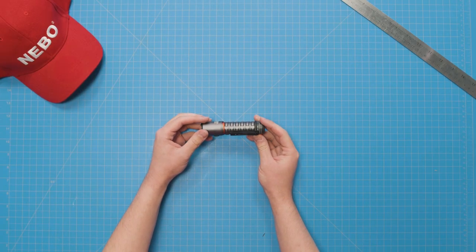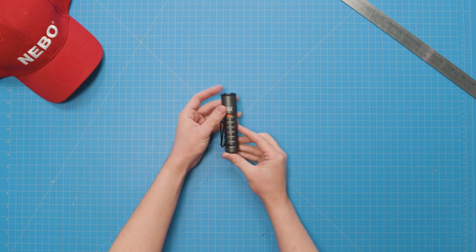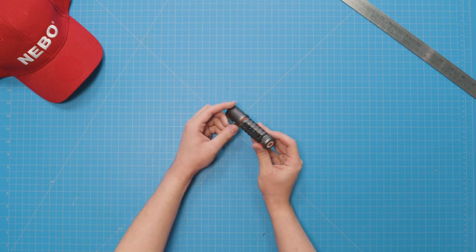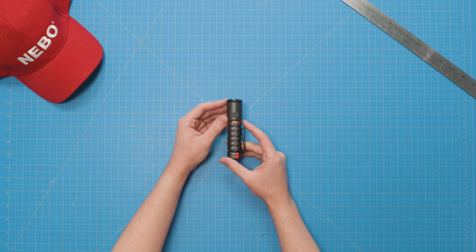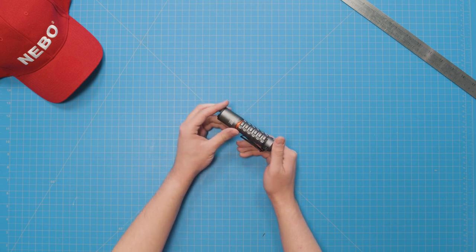Okay, so here it is, the Torchy 2K. This compact flashlight is absolutely perfect for everyday carry, and with a 2,000 lumen turbo mode, its brightness will blow you away.